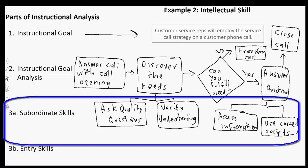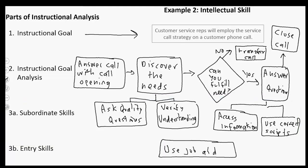A sub subordinate skill though for these might be that you have to use the appropriate job aid. So if you're going to use the correct script, you have to use the job aid. And maybe when you answer the call with your call opening, you're using the job aid to use the proper opening. And even when you're closing the call, you might do the same thing. So this job aid might be a big part of doing all these steps.